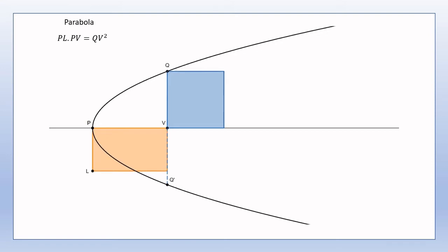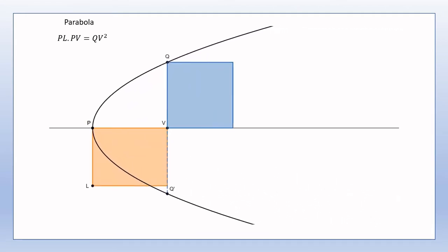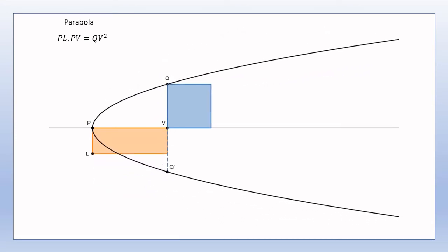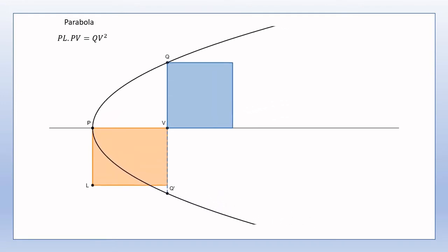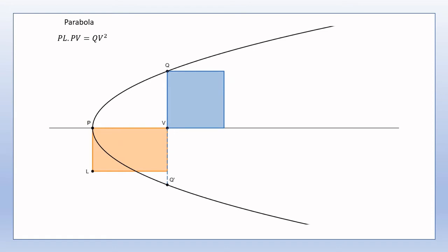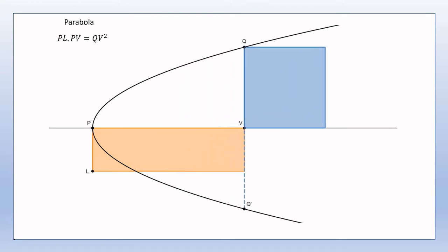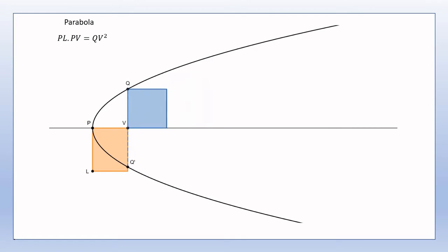By varying the length of the latus rectum and keeping the abscissa in the same position, we can see how the shape of the parabola varies. We can also keep the length of the latus rectum constant and vary the abscissa. Of course, all of this would work exactly the same for the other ordinate Q'V — that is, we would have PL times PV equals Q'V squared.